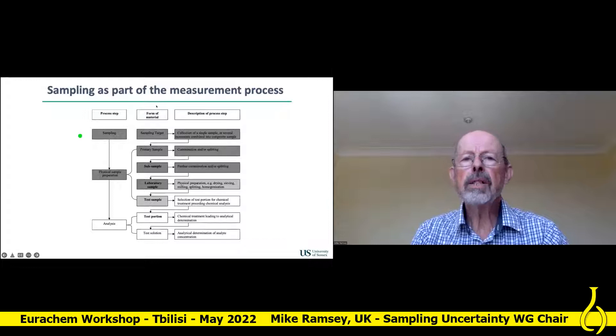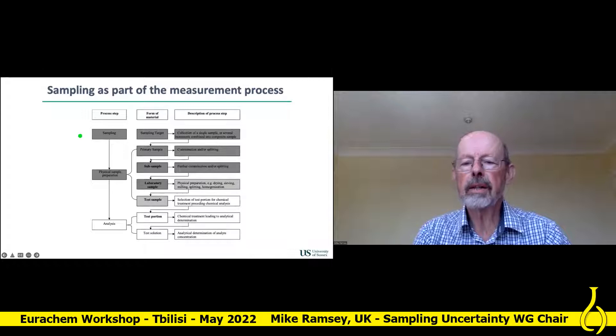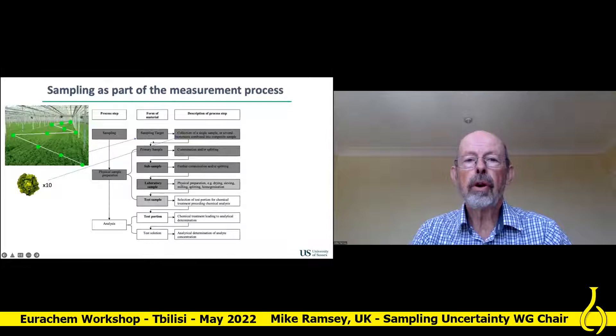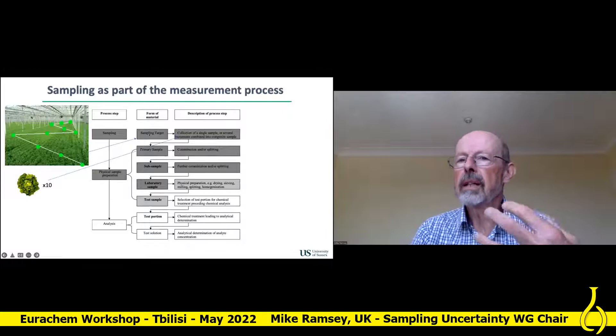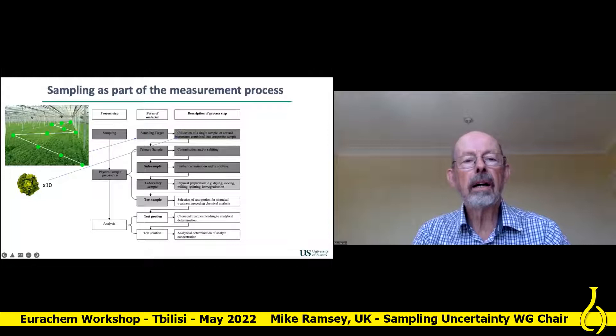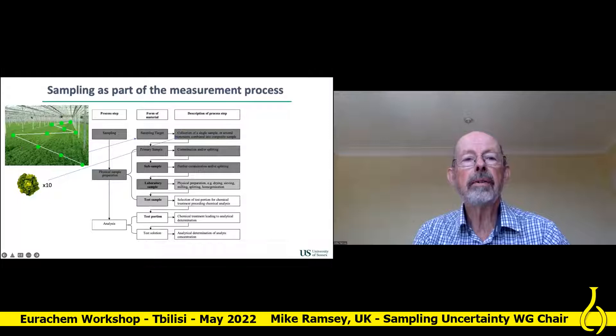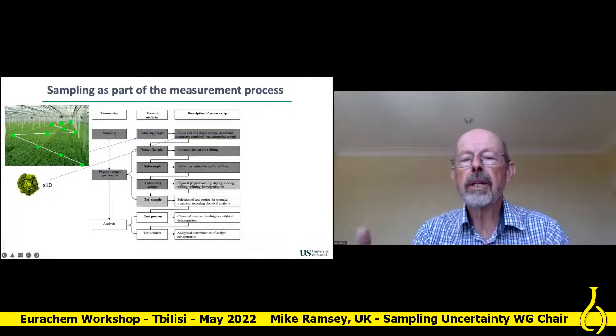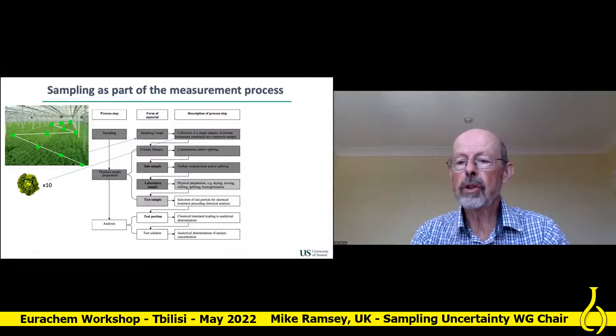Here's an overview of the measurement process taken from the Eurochem guide. It's not just the white bit — the analytical bit — there are all these grey bits where the sampling and sample prep goes on. We've got to get our terminology right. The first thing is to define the sampling target that the sample is meant to represent. Here, for example, is a bay of 12 to 20,000 lettuces. We're going to estimate the mean concentration across there and take a tenfold composite. The number of increments in the composite sample will be very useful in controlling uncertainty.